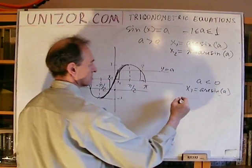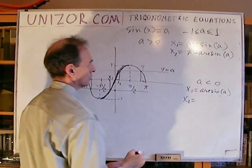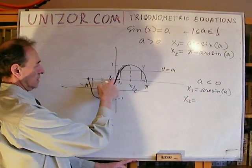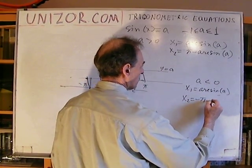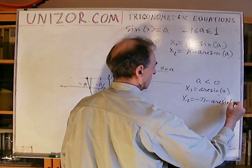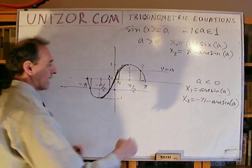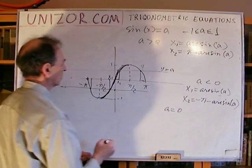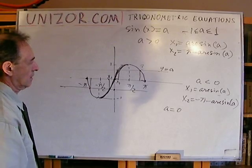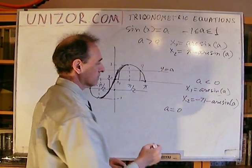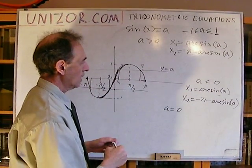For negative a, the same logic applies. x1 = arcsin(a), which is negative. The second solution is x2 = −π − arcsin(a), which comes from starting at minus π and adding the (negative) arc sine value. So we have two solutions within the period for both positive and negative a.